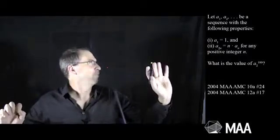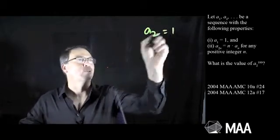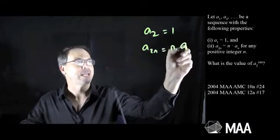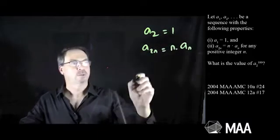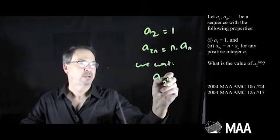Got a sequence with the following properties. I misread it - a₂ is 1, and a₂ₙ is n times aₙ. And we want, let's write what we want, a₂ to the 2 to the 100th power.